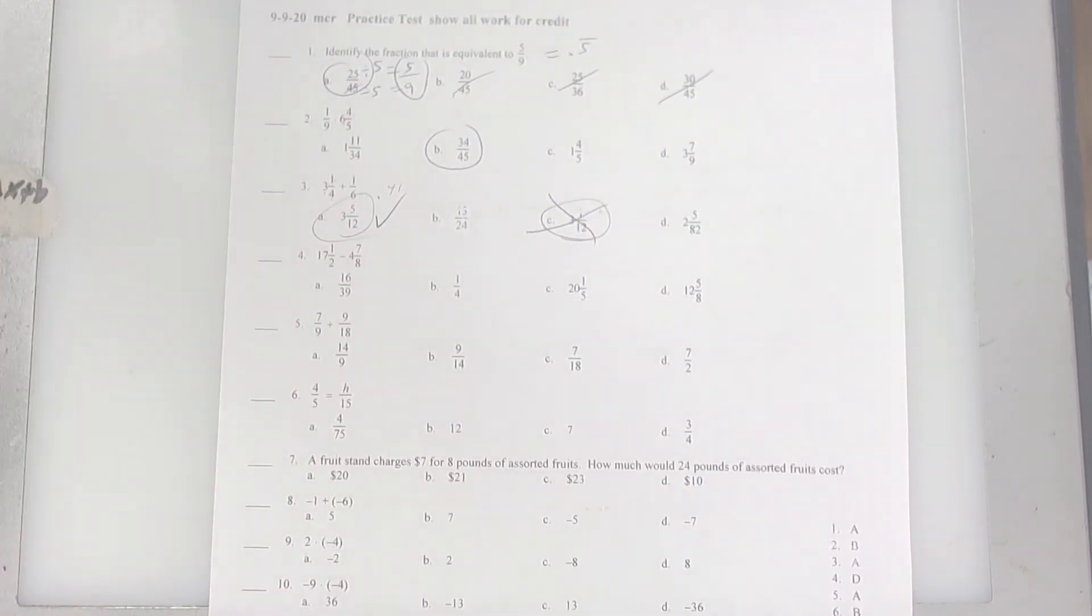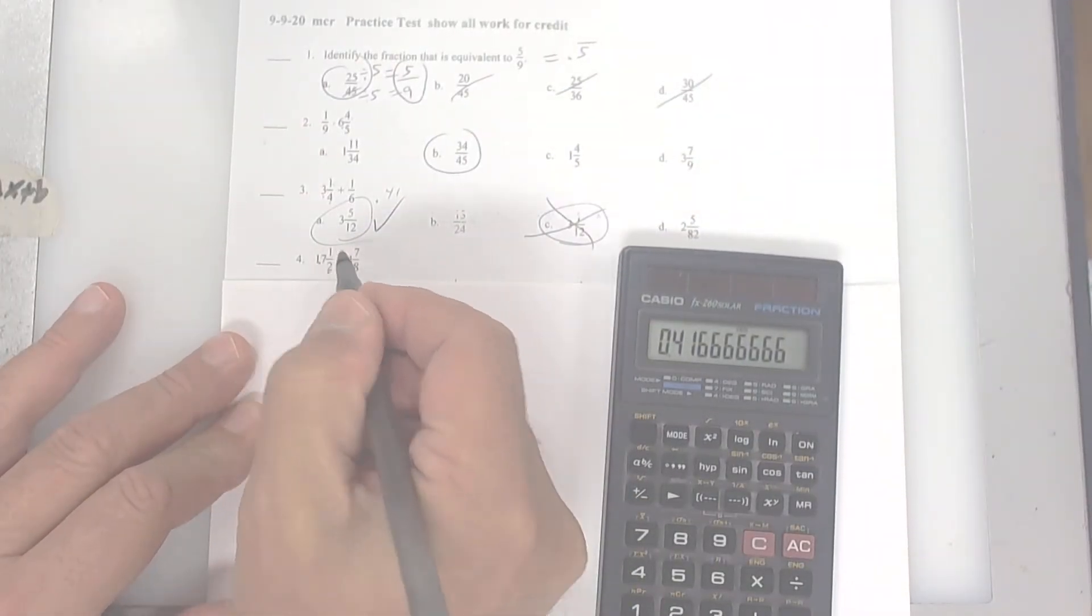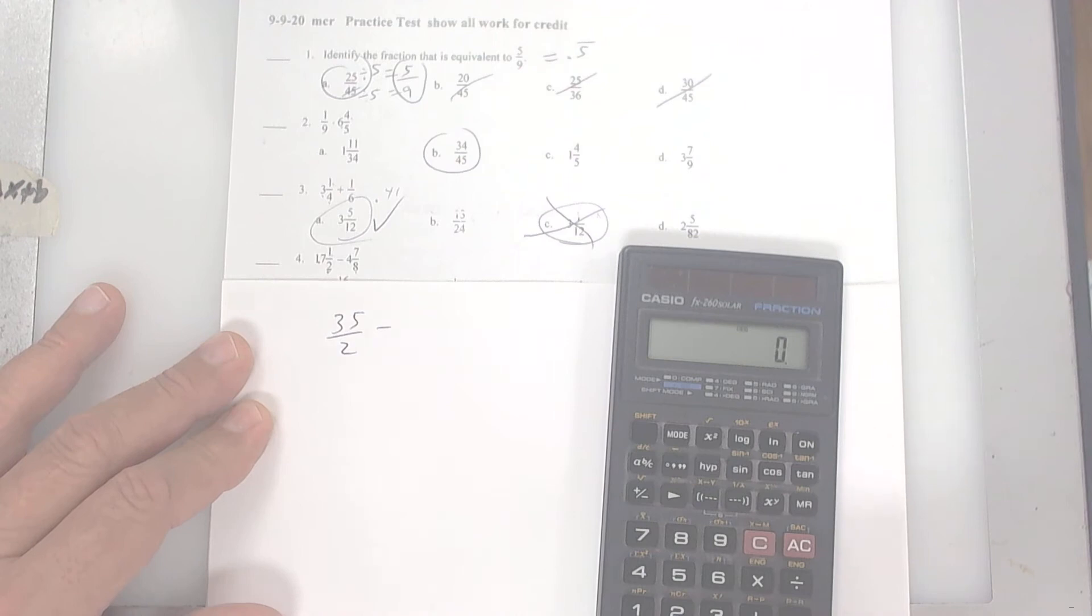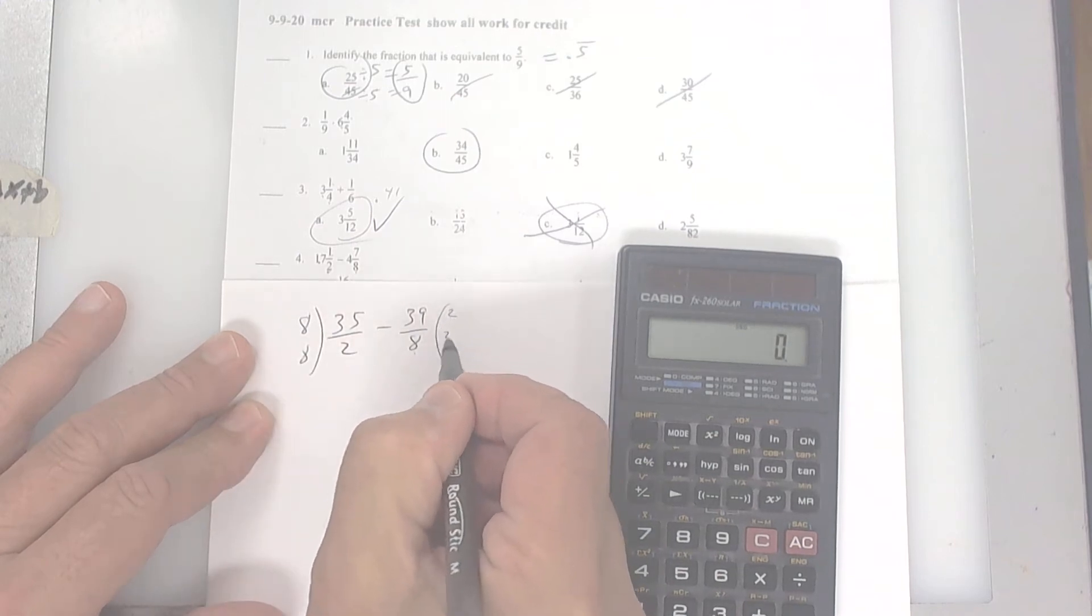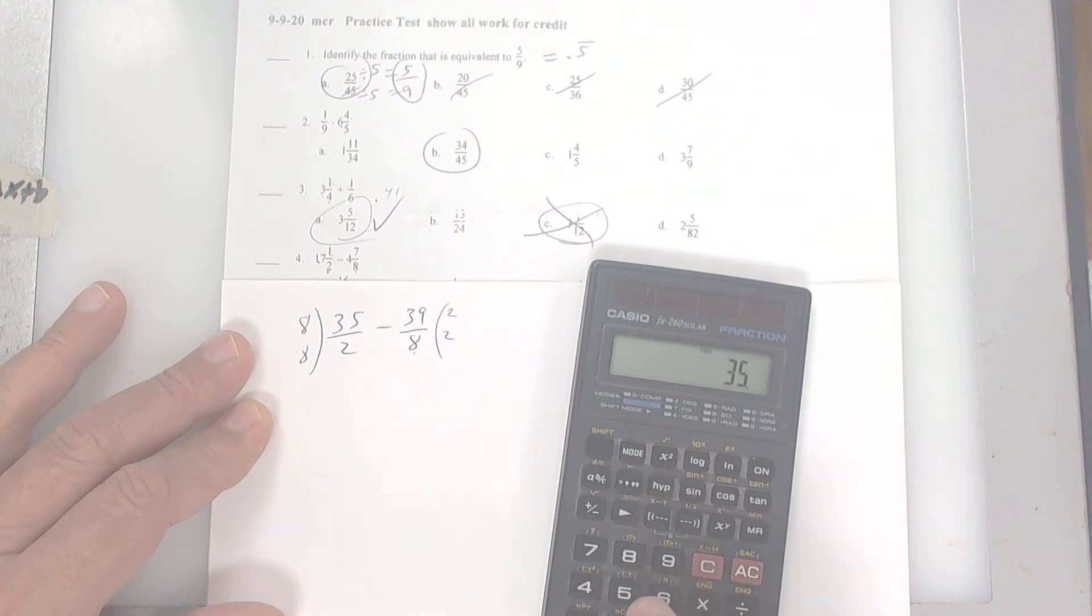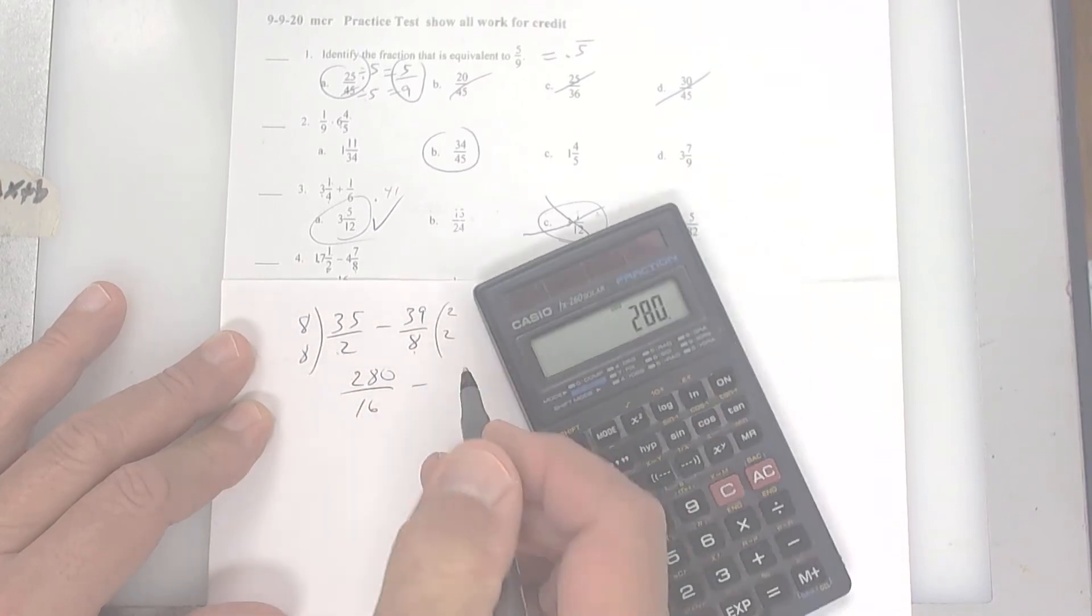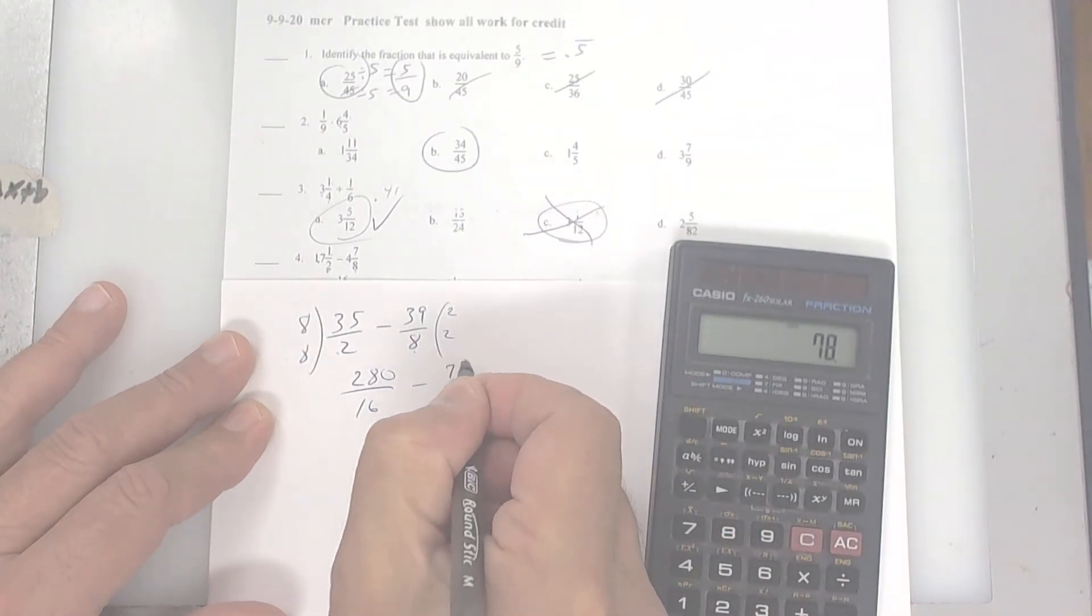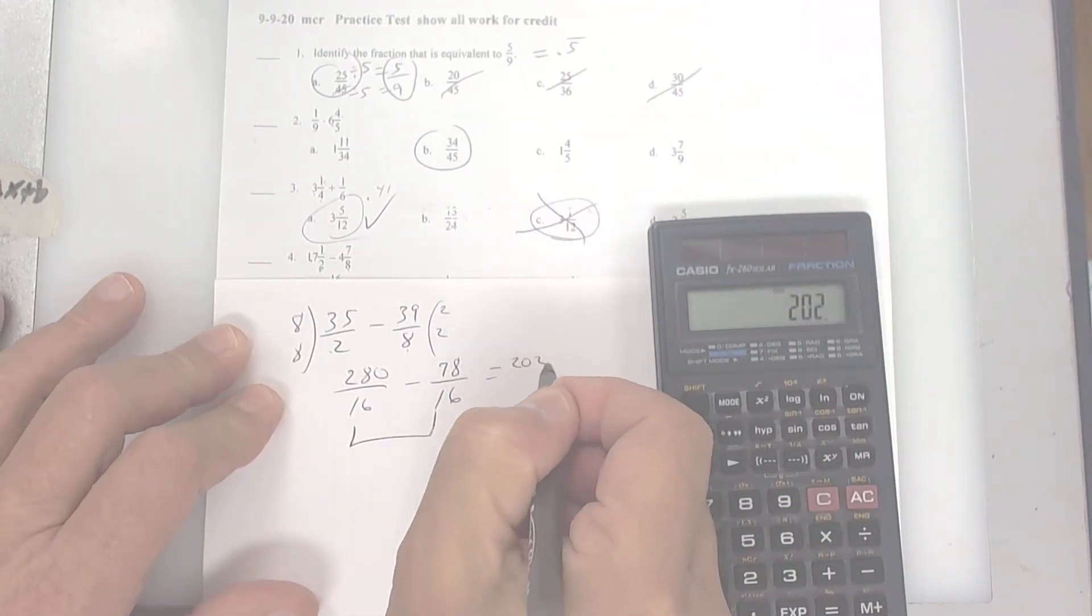All right, next. This one right here, number 4, is subtraction. So you want to go ahead and 17 times 2 is 34 plus 1, so 35 over 2 minus 4 times 8 is 32 plus 7 makes 39 over 8. Take the 8, put it over here. Take the 2, put it over here. I'm going to get 8 times 35. So 35 times 8. I get 280 over 8 times 2 is 16 minus 39 times 2. I get 78 over 16. Now I have the same denominator. So I'm going to do 280 minus, disregard the negative. Change it if you want.